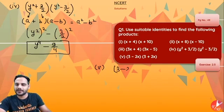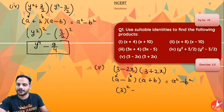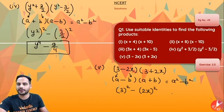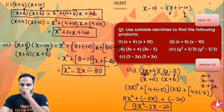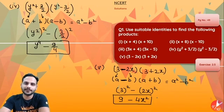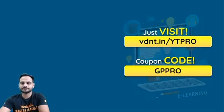For the fifth one, 3 minus 2x into 3 plus 2x. Again here if 3 is a and 2x is b, so it is a minus b into a plus b which is nothing but a square minus b square. So it will be 3 square minus 2x whole square. 3 square is 9 minus 4x square. So using these two identities we have found the products. You can clearly see how useful our identities are in getting the products.